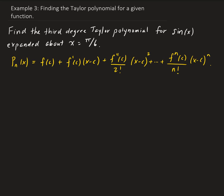In this example, we want to find the third degree Taylor polynomial for sine x expanded about x equals pi over 6. The equation in yellow is the Taylor polynomial formula that we're going to use. We need to find the successive derivatives for sine x and then evaluate those at pi over 6.